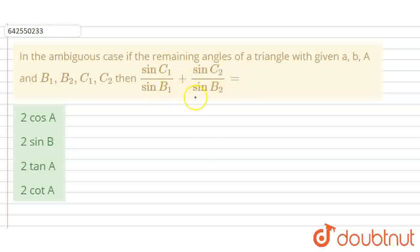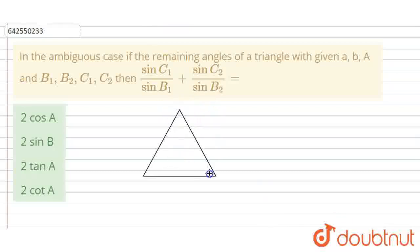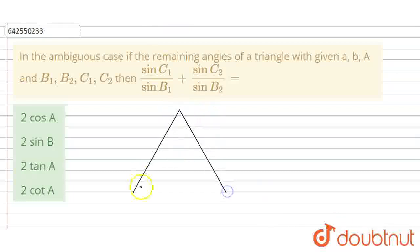Okay students, let's move to the answer now. I am going to draw the diagram here for the given condition. So, this is the triangle A, B, C with points B1 and C.